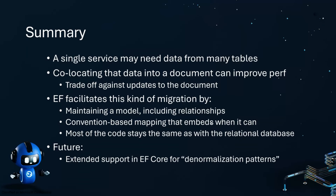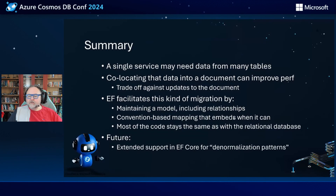Entity Framework facilitates this kind of thing by maintaining your model with a rich structure — including foreign keys and relationships available to load. Convention-based mapping automatically embedded the embedded writer into the document since that was the natural shape for a document database. And we didn't actually change very much code — most of the EF code you use against relational databases stayed the same. In EF9 specifically, we're really focusing on the Cosmos Query Pipeline and updating the fundamentals to bring it up to the level that the relational offerings are at.